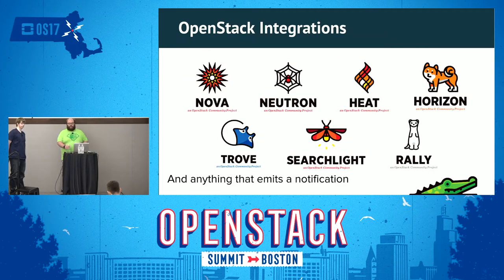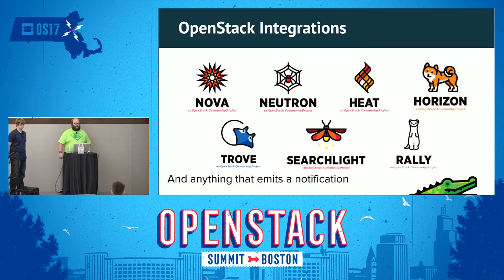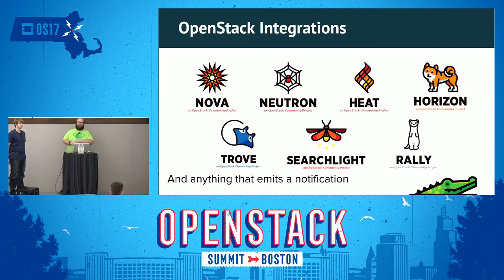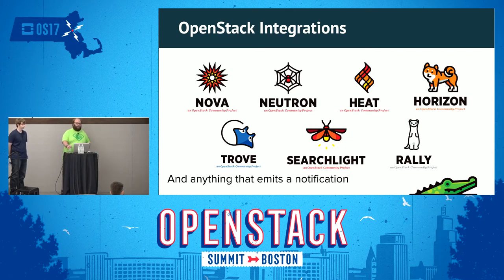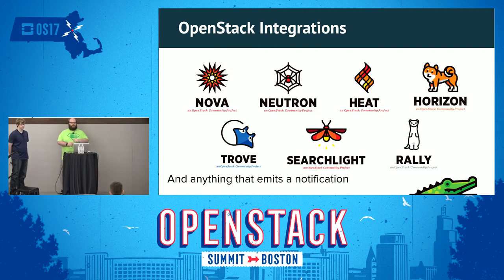We've integrated well into the broader OpenStack ecosystem. We have plugins in Neutron that allow automatic records to be created whenever you create a Neutron port or a floating IP, which also manages reverse DNS for your users. We have the usual Heat resources and a Horizon plugin. Trove can integrate with us directly to create DNS entries for your databases, and we support pushing information into Searchlight so DNS resources can be indexed and searched across your OpenStack installation.